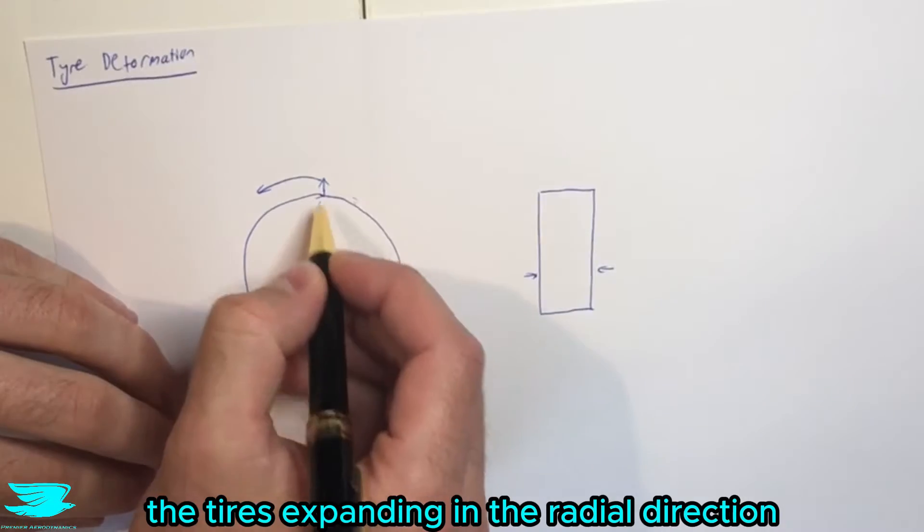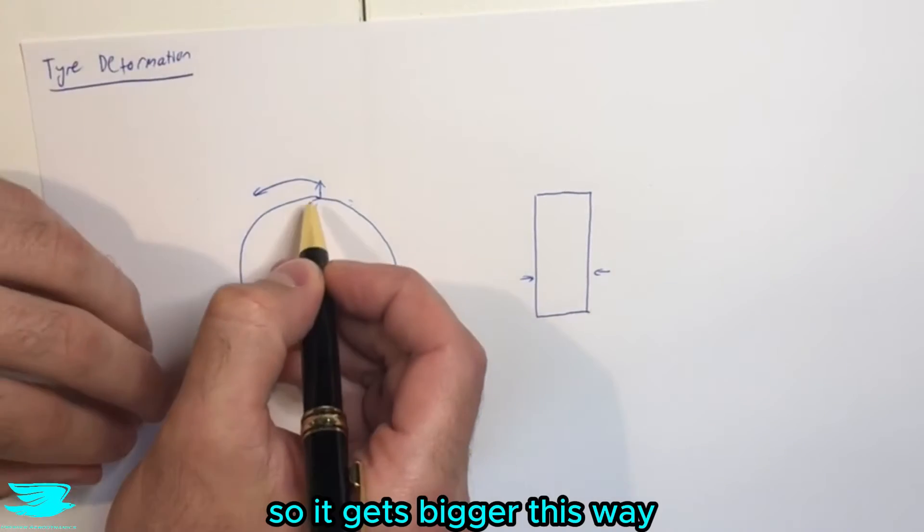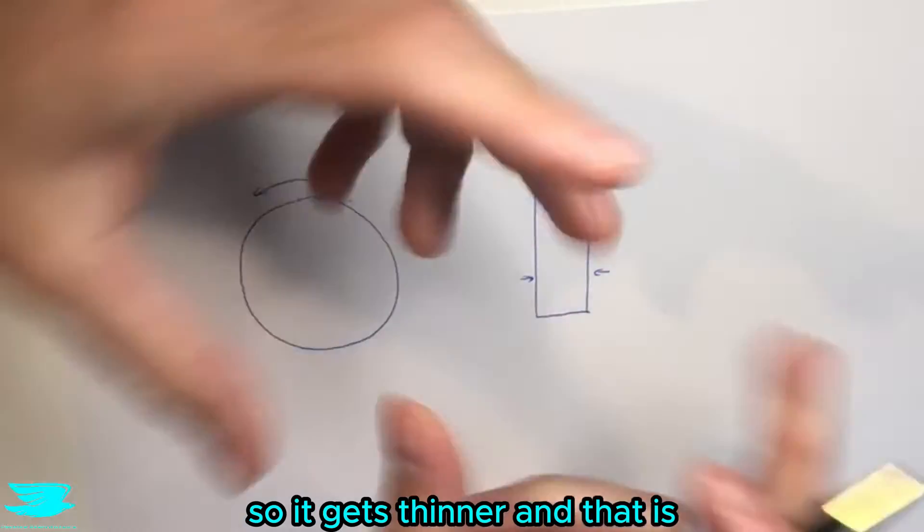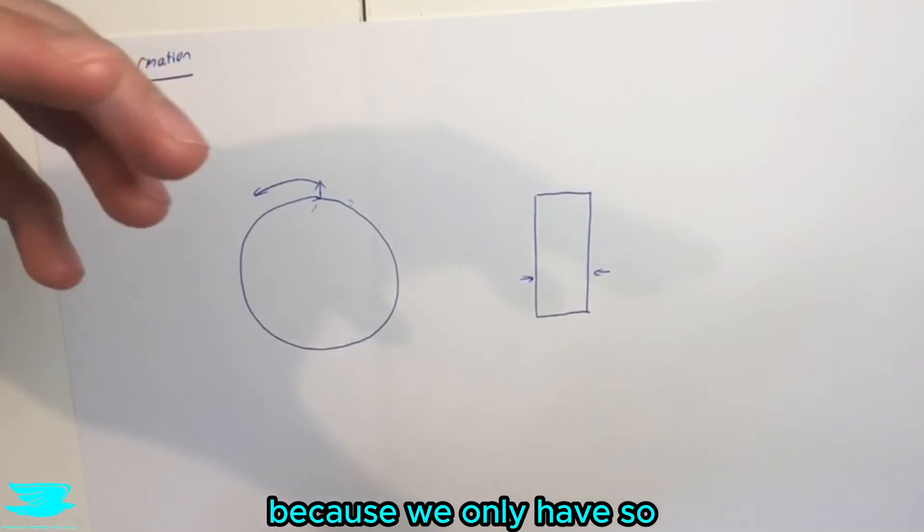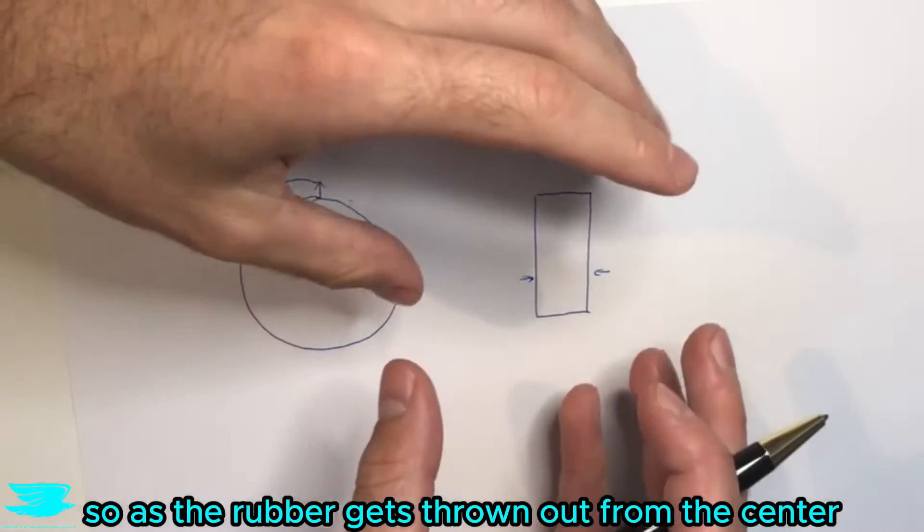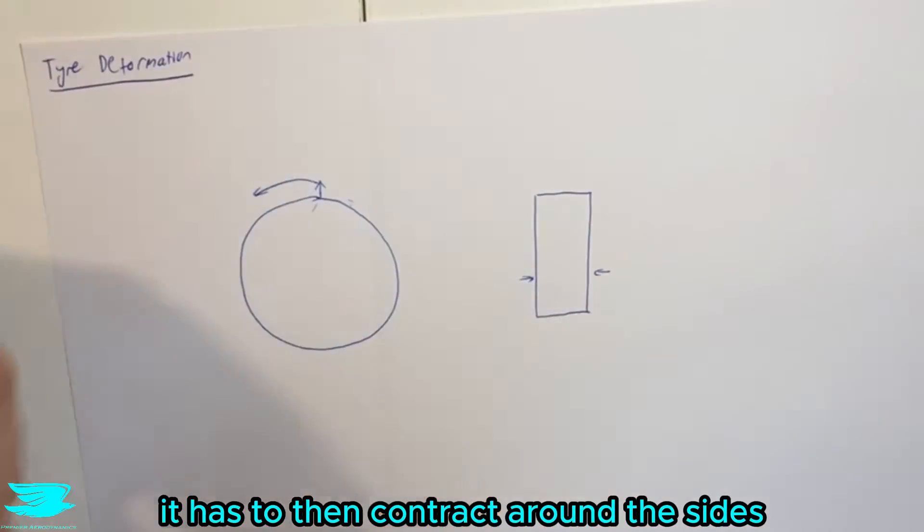And we actually get the tires expanding in the radial direction, so it gets bigger this way, and contracting in the axial direction, so it gets thinner. And that is because we only have so much rubber to go around, so as the rubber gets thrown out from the center, it has to then contract around the sides.